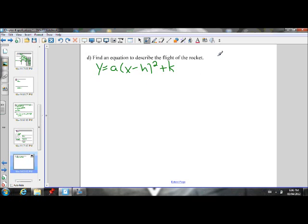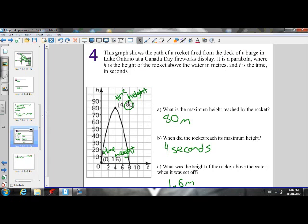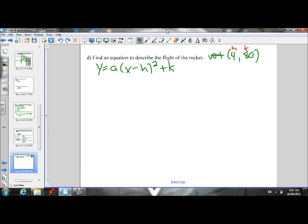So find an equation. I know my vertex was given to me. It's at 4, 80. And the vertex is, we remember, H, K. Vertex is always H, K. And I also have another point on the parabola, 0, 1.6.